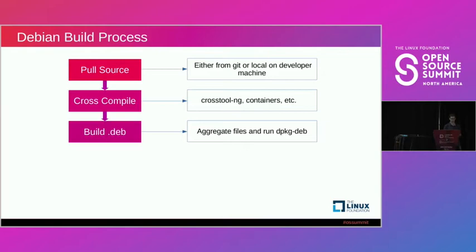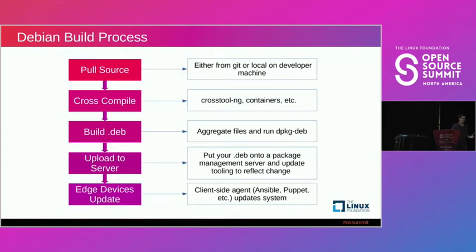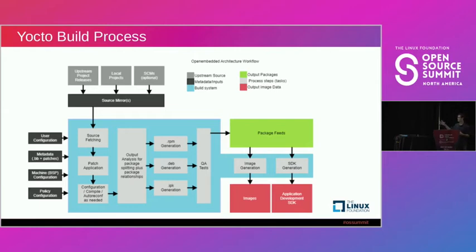With your Debian package in hand, you upload it to a package management server, and your devices have an agent running — whether that's Ansible or Puppet — that will pull your changes and update the system. Compared to the Yocto build process, there's a big complicated graph right out of the Yocto manual, but in order to utilize the Yocto build process you run BitBake, and BitBake is the tool that builds your system image and does all these steps for you.